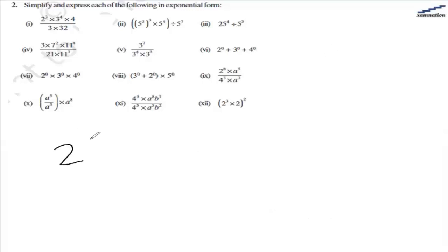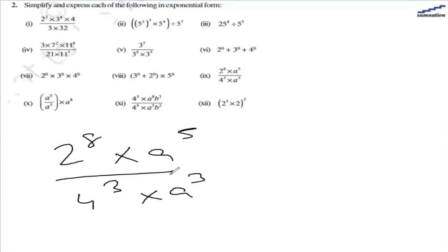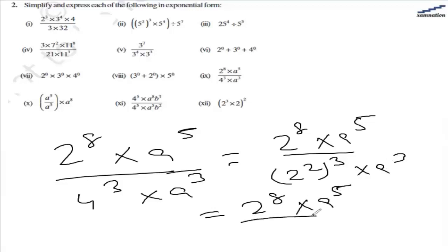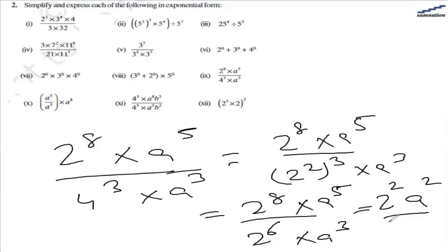In the ninth part, we have 2 raised to the power of 0 multiplied by a raised to the power of 0, and 4 raised to the power of 0 multiplied by a raised to the power of 0. Now 4 is basically a multiple of 2, so let's simplify. We end up with 2 raised to the power of 0 and a raised to the power of 0. Since anything to the power of 0 is 1, the answer is 2 raised to the power of 0 multiplied by a raised to the power of 0, which equals 1.